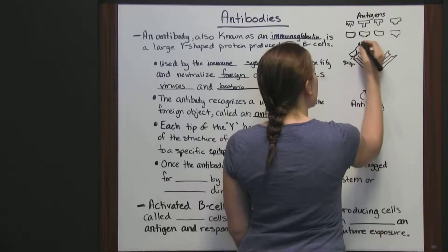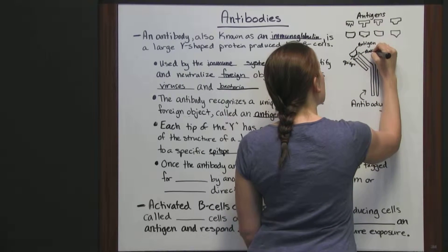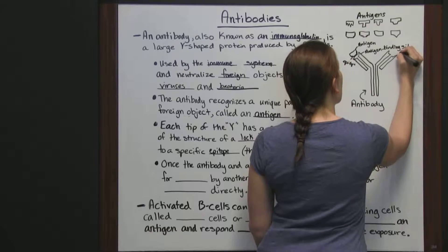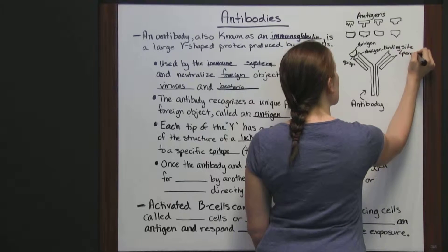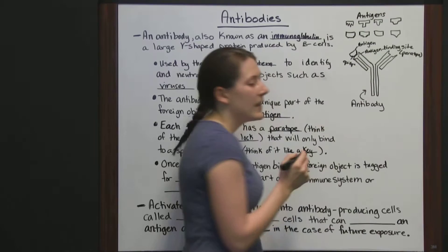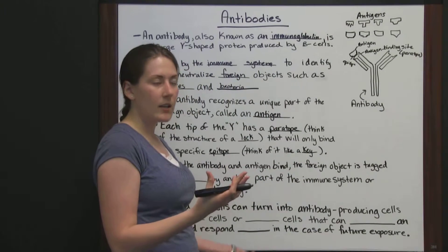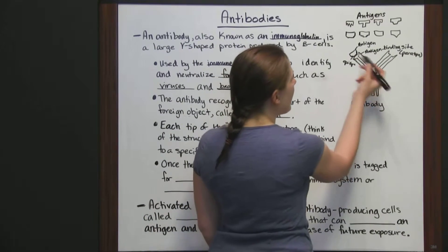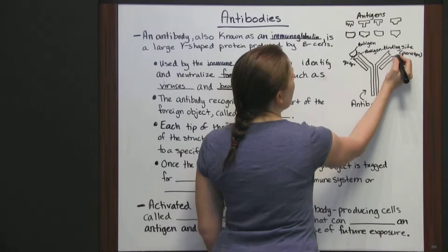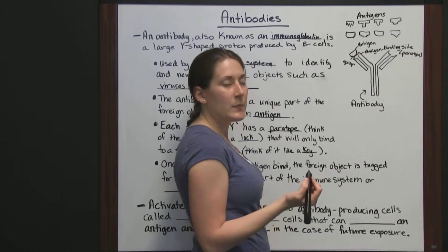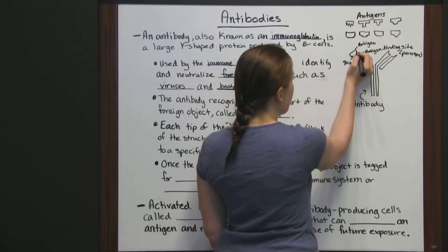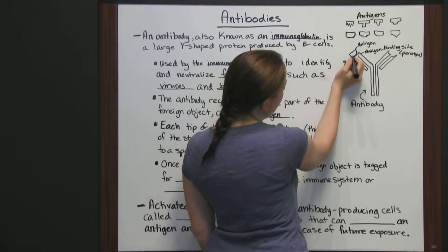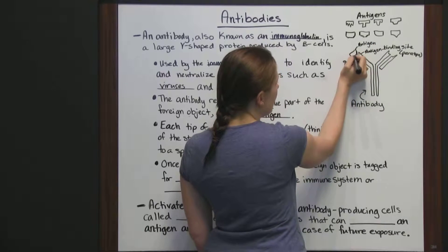If this is our lock here — this antigen-binding site, or the paratope — then it's only going to fit with one key. A lock is only going to be unlocked with one key; you have to have the right key to get it to unlock. Each part of the Y is only going to bind to a specific antigen. The paratope, this little shape on the end of our antibody, is only going to bind to one epitope, which is located on an antigen.